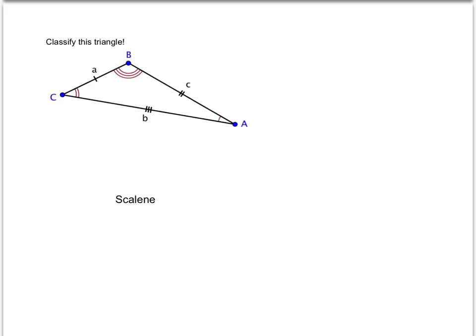The red congruence marks show that none of the angles are congruent. Furthermore, angle B looks obtuse. So this triangle is scalene and obtuse. We've classified this triangle in two ways: by sides and by angles.